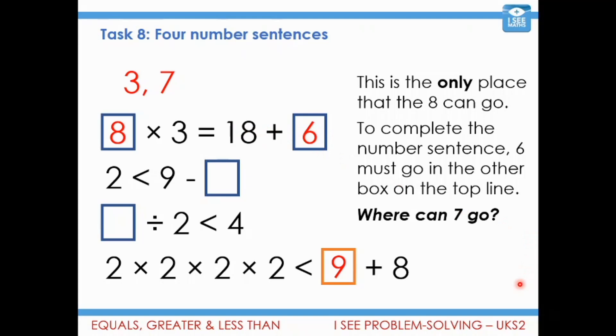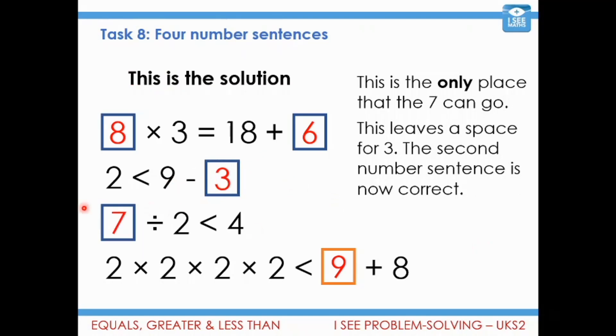And so then I'm left with thinking, well, where can the 7 go? Now, the reason I go for the 7 is both numbers work in this place here. So either number could go here. And actually, the 7 can't go here, because 9 subtract 7 equals 2. So that tells me that the order has to be 7 in this number sentence and 3 in here. Whereas 3 could have gone in either place, the 7 can only go in one place. And there we have it, a solution to our main task.